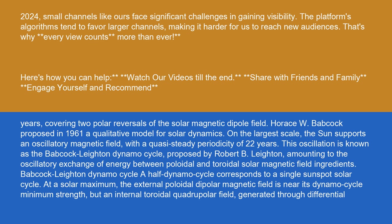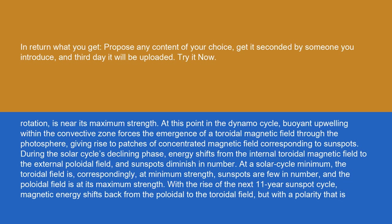At a solar maximum, the external poloidal dipolar magnetic field is near its dynamo cycle minimum strength, but an internal toroidal quadrupolar field generated through differential rotation is near its maximum strength. At this point in the dynamo cycle, buoyant upwelling within the convective zone forces the emergence of a toroidal magnetic field through the photosphere, giving rise to patches of concentrated magnetic field corresponding to sunspots.